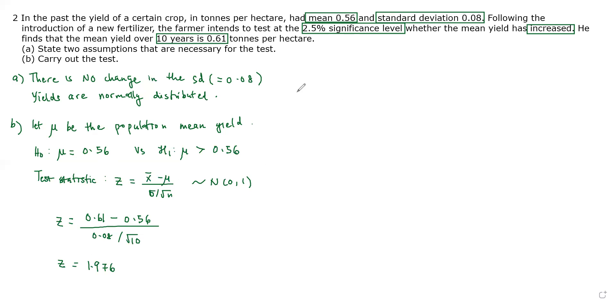We need to identify the rejection region in order to test. For this case, the rejection region is a right-tail region in the standard normal distribution. Because we are testing that μ is greater than 0.56, this is the region that we need to shade. And the area of this is 2.5%, which is 0.025, because we have a 2.5% significance level, so α equals 0.025.